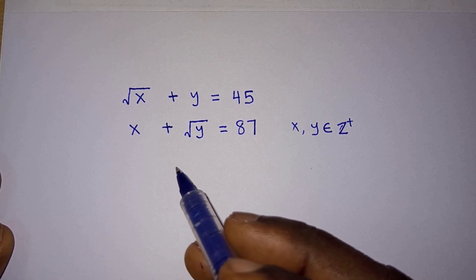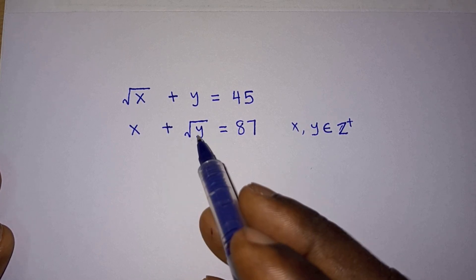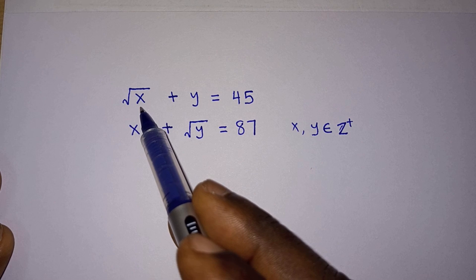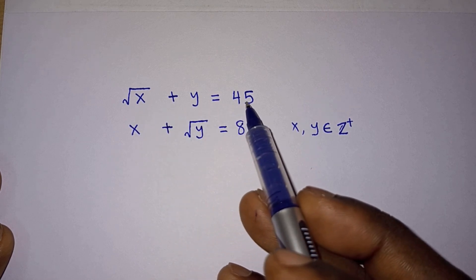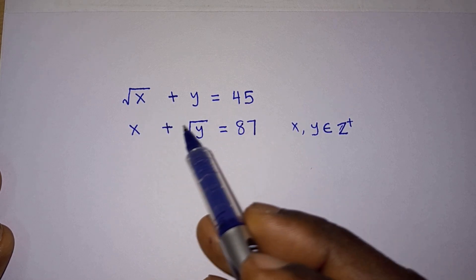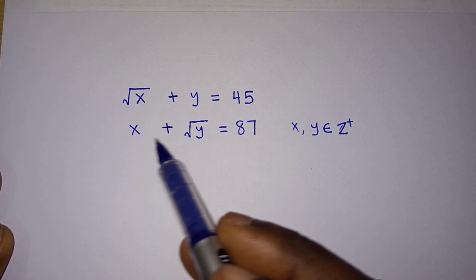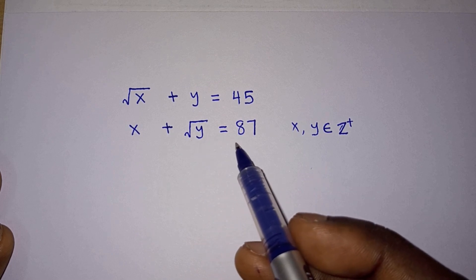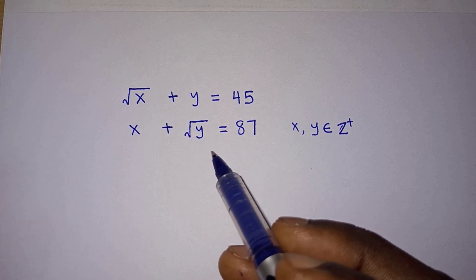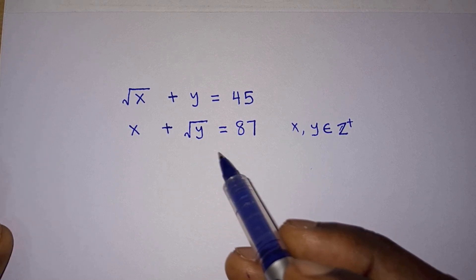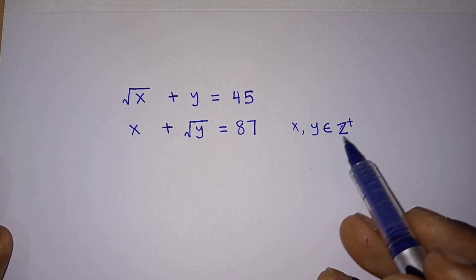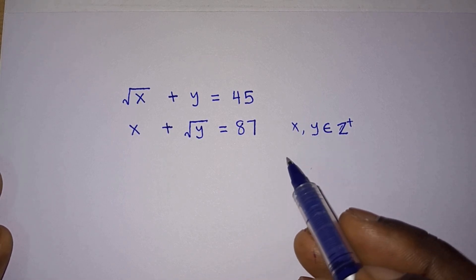Hello everyone. In this video we are given the system of equations: square root of x plus y is equal to 45, and x plus square root of y is equal to 87. We have to find the values of x and y, where x and y are positive integers.